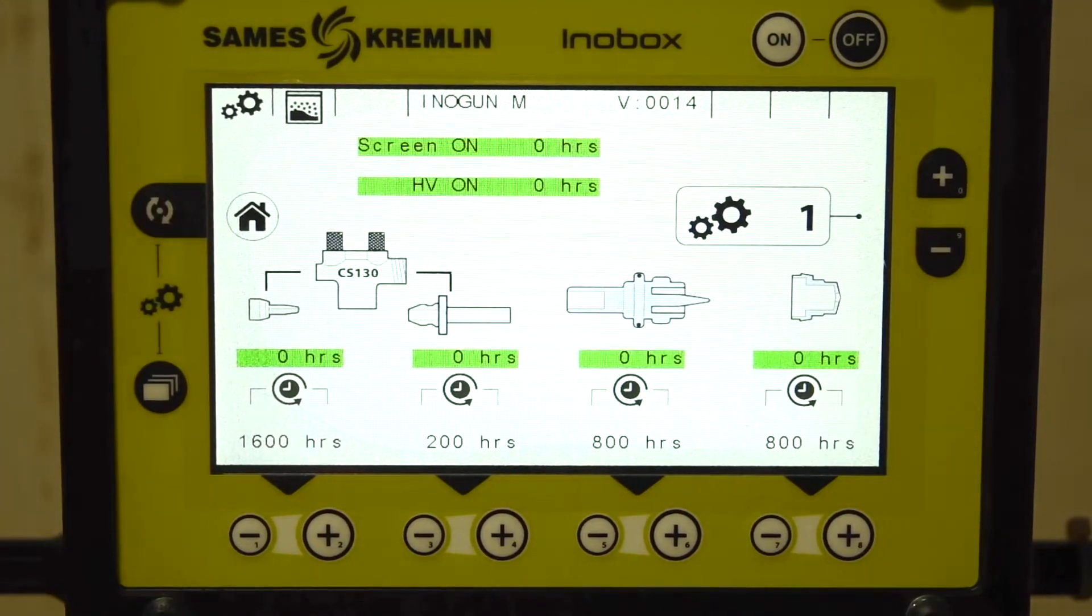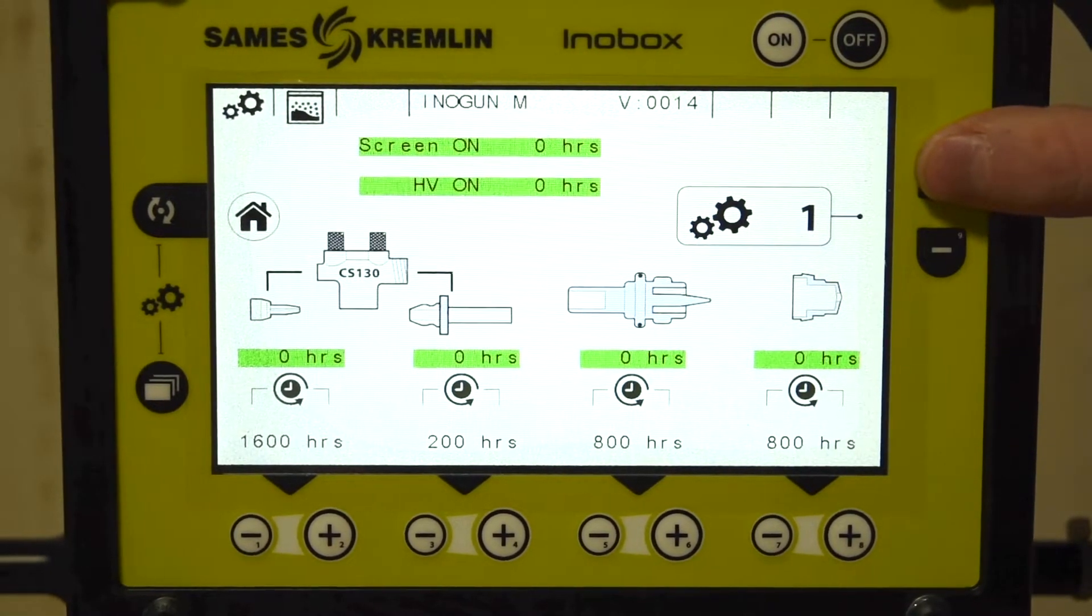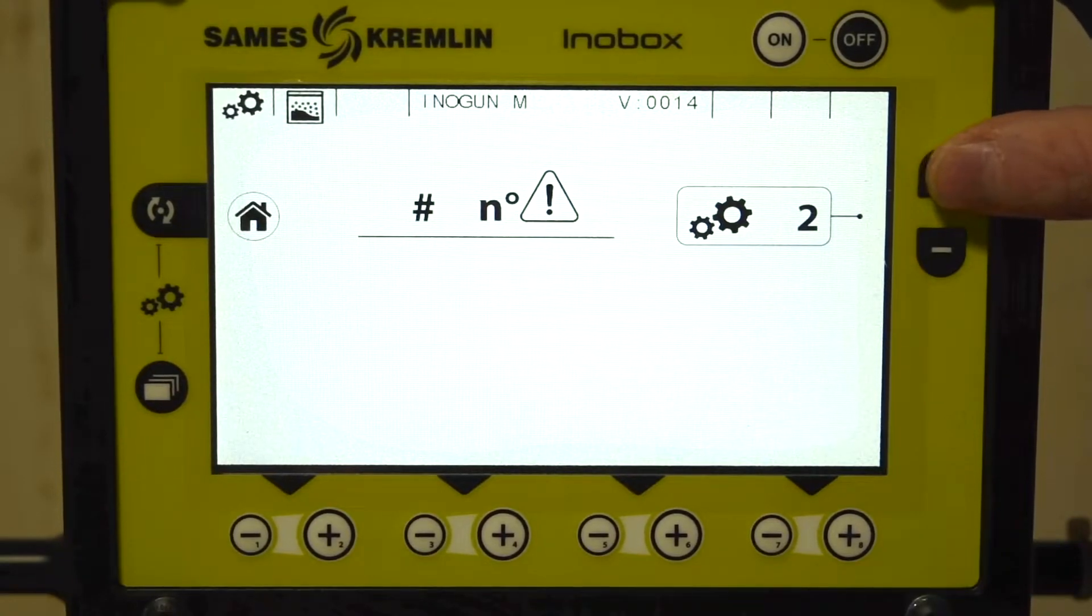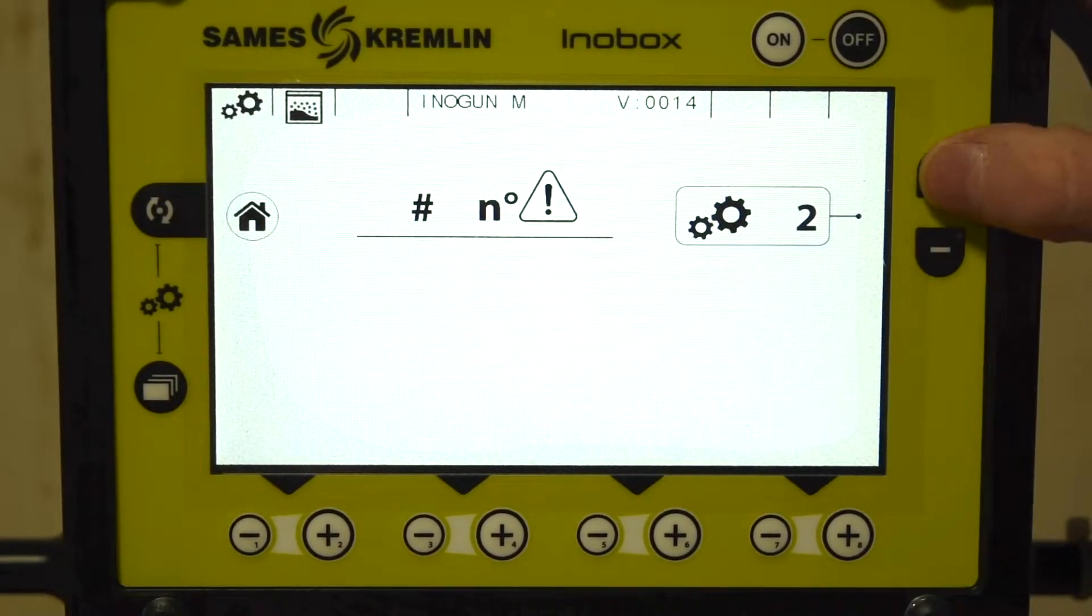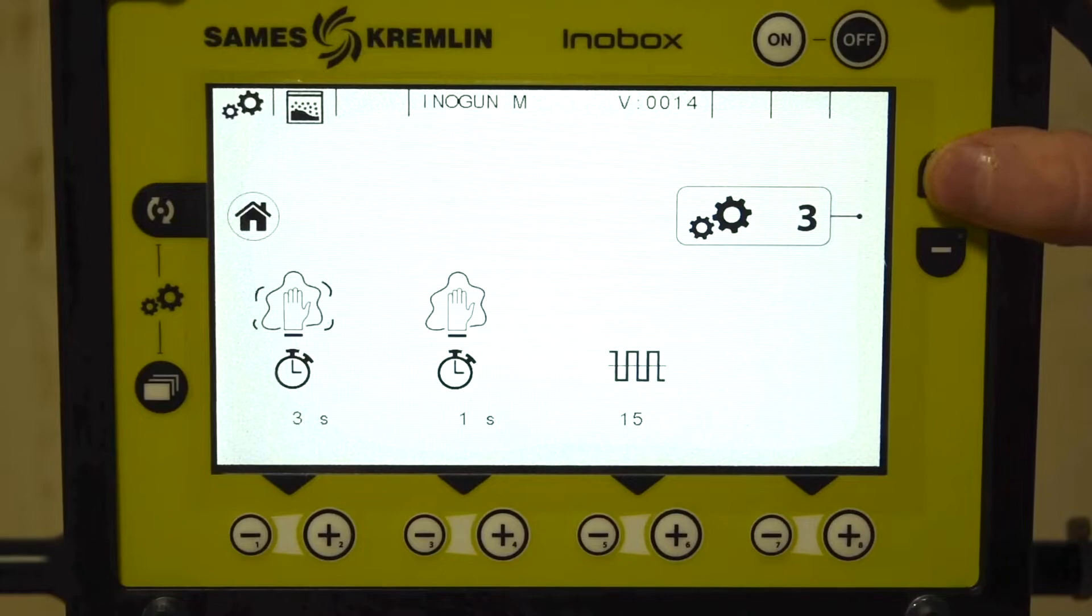The first screen is the maintenance screen, which shows your operating time and scheduled maintenance time for wearable items. The next screen shows a log of error codes. The third screen contains parameters for your cleaning mode.